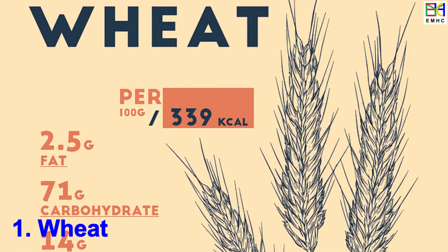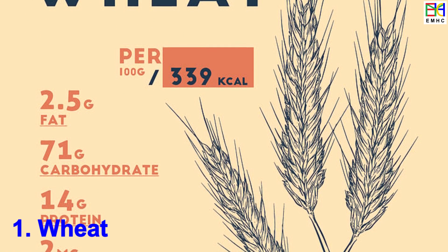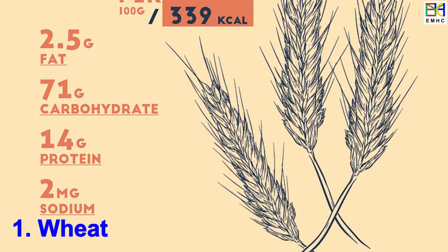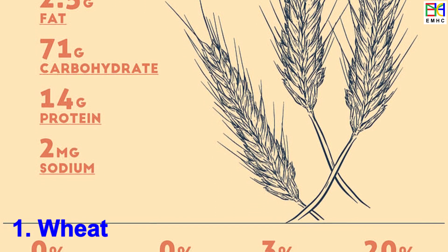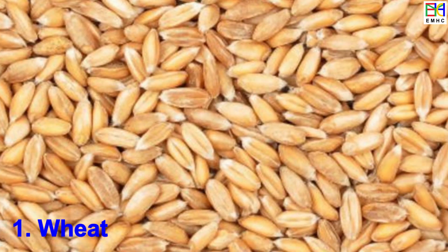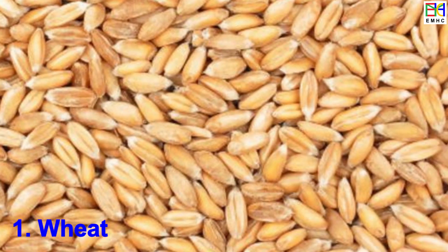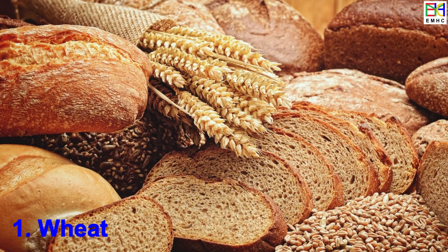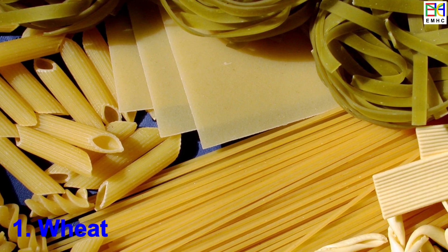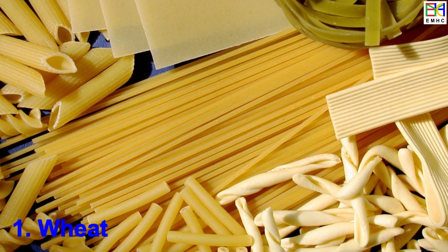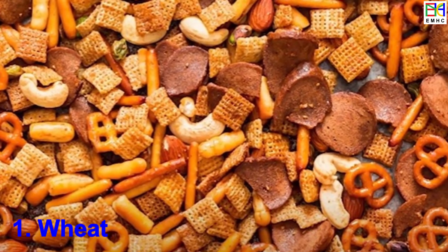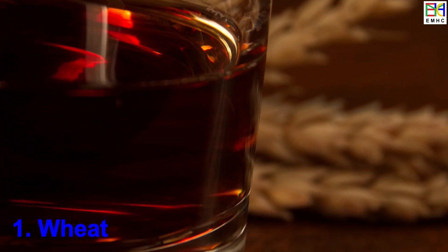Wheat grains are a rich source of carbohydrates, dietary fiber, proteins, particularly gluten, vitamins such as B vitamins, and minerals like iron and magnesium, providing energy and essential nutrients. As a staple food, wheat is widely used for making flour, which is used in bread, pastries, pasta, breakfast cereals, and other baked goods, as well as in the production of fermented products like beer and whiskey.